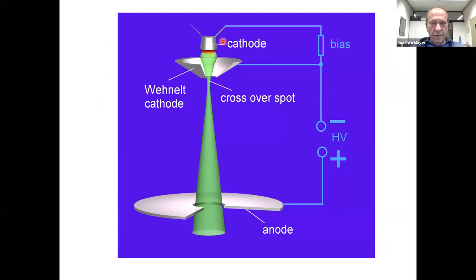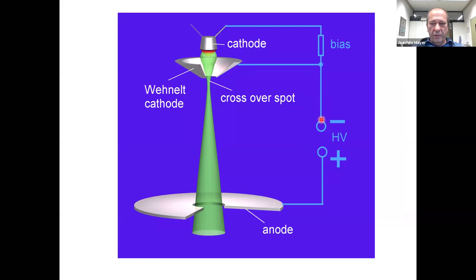Starting at the top with the electron source: we need an electron beam from a cathode. In the simplest case, we heat a tungsten wire to about 2,500 to 3,000 degrees so it emits electrons. We focus the beam with another electrode called the Wehnelt cathode, bringing electrons to a crossover spot, then accelerate them with high voltage — 200,000 or 300,000 volts. This lower electrode is the anode, with a hole of about one millimeter diameter where the electron beam enters the electron-optical column.